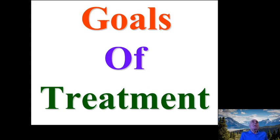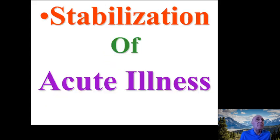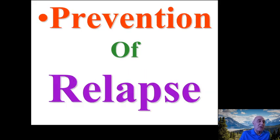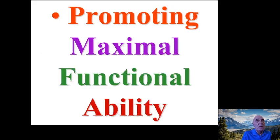Before starting treatment, our goals must be clear. The first goal is to stabilize the acute illness. The second is to prevent relapse. We also need to minimize both positive and negative symptoms of schizophrenia, and to promote maximal functional ability for the patient.